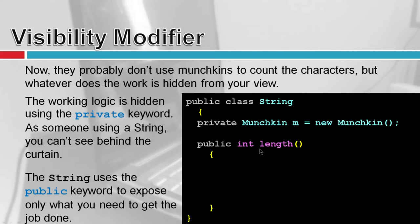We expose functions like length using the public modifier. I want people using my String class to use the function length. I don't want them to use internal implementation details, so I make those private. So the two keywords we're focusing on are private — only things in your class can use it — and public — anybody can use it.